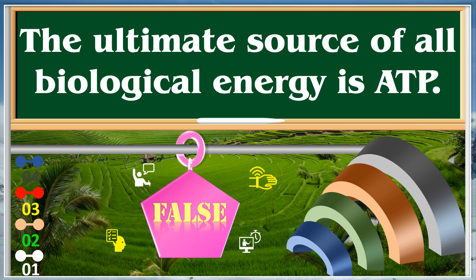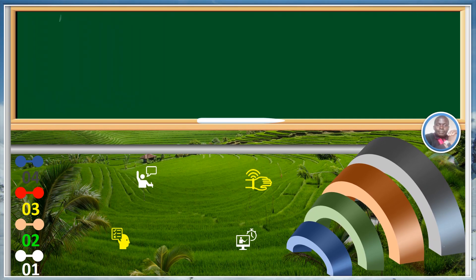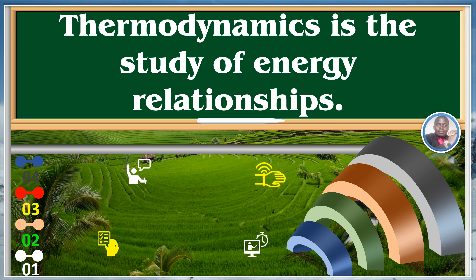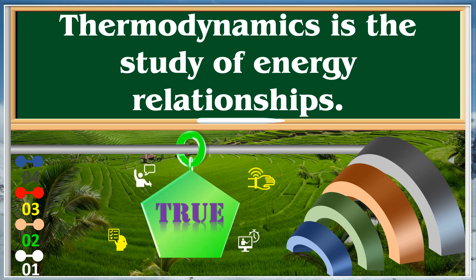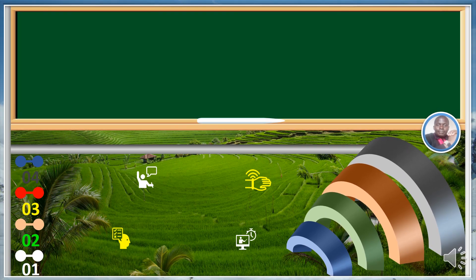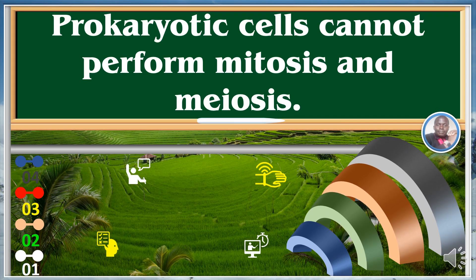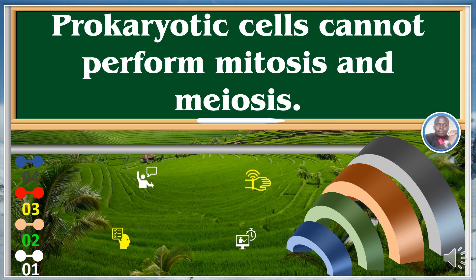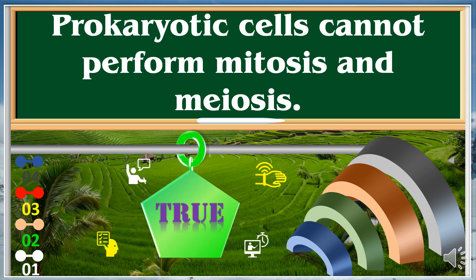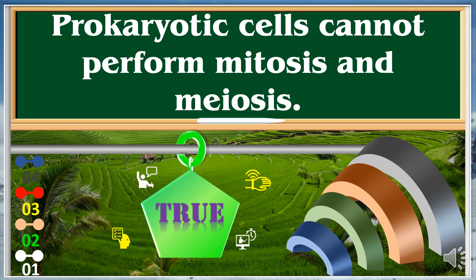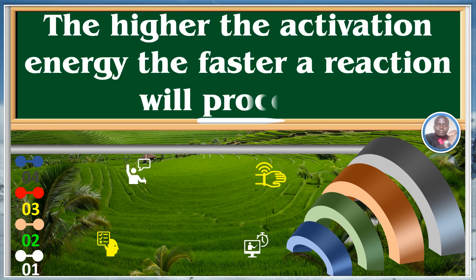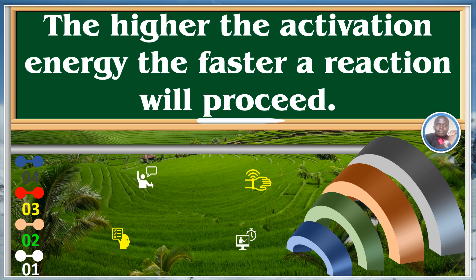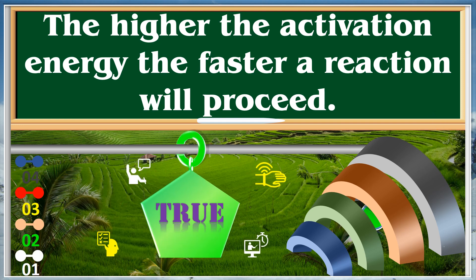False. Thermodynamics is the study of energy relationships. True. Abiotic cells cannot perform mitosis and meiosis. True. The higher the activation energy, the faster a reaction will proceed. True.